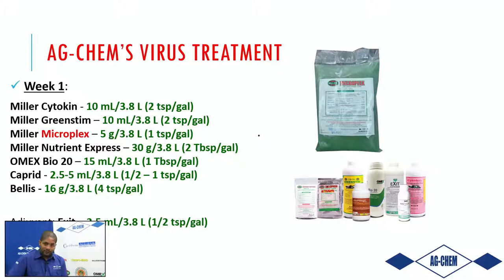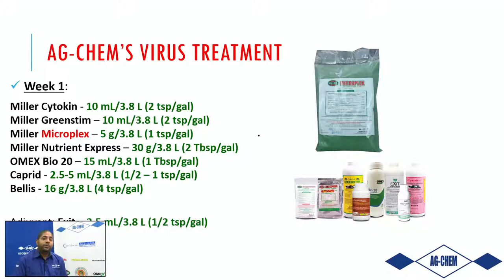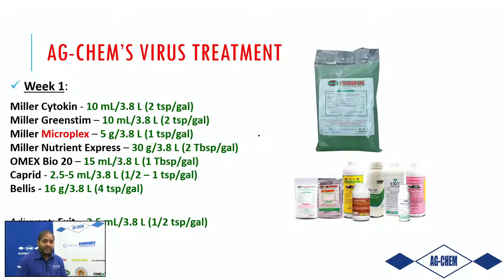Our AgChem virus treatment program is what we use to help build the plant's immunity. As mentioned, you cannot cure a viral infection, but by building the plant's immunity and resilience, we assist the plant in being able to produce flowers and fruit to help the farmer recover some losses. The major components of our virus treatment program include our Miller MicroPlex.